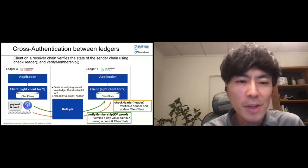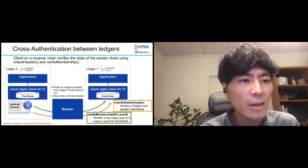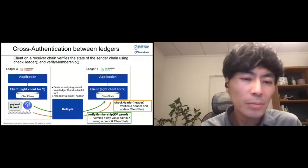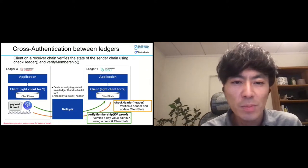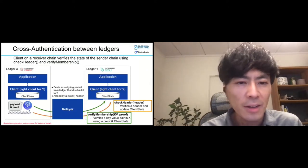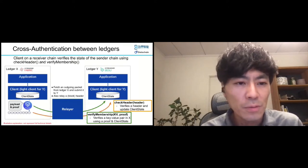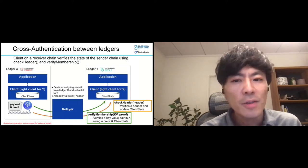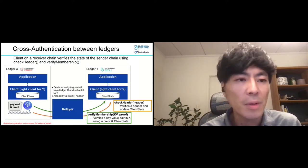In a receiver chain — LedgerY's on-chain light client — CheckHeader is given a header of LedgerX and updates its current state on LedgerY. Also, VerifyMembership is given a key-value pair and its proof, then verifies if the pair exists in the ledger based on the proof. These functions make use of the underlying ledger structure, so we design and develop such functions for Hyperledger Besu and Hyperledger Fabric.